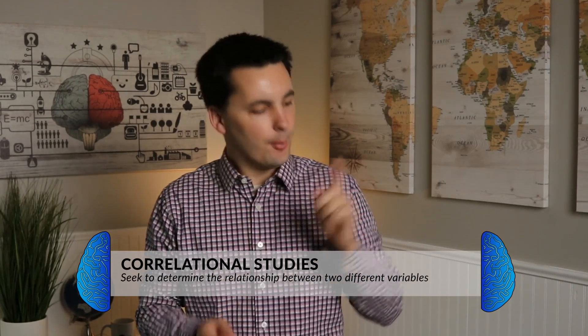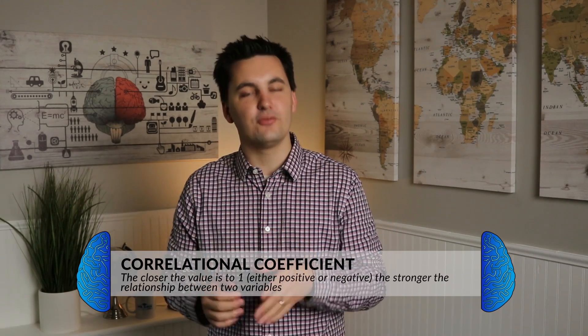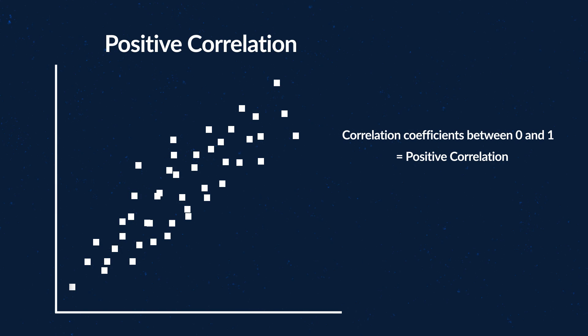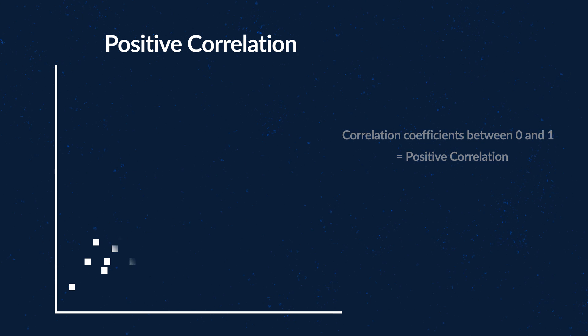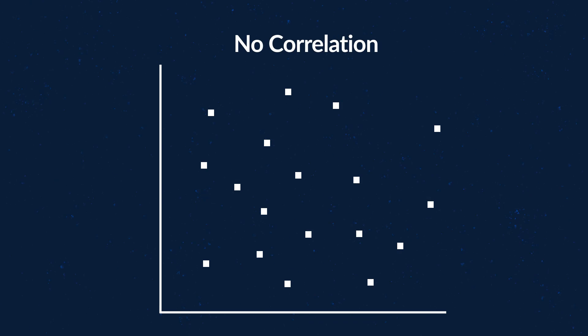When talking about coefficients, we need to go back to correlational studies — these studies seek to determine the relationship between two different variables. Correlations allow us to make predictions on what will happen, but they do not show causation. When analyzing the results of a correlational study, you'll look at the correlational coefficients. The closer the value is to one — whether positive or negative — the stronger the relationship between the two variables. If the coefficient is between zero and one, the variables are either increasing or decreasing together (a positive relationship). If it's between zero and negative one, one variable increases while the other decreases — an inverse or negative relationship. If there is no correlation, the data points on a scatterplot would be all over the place.